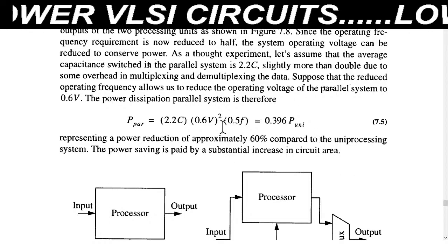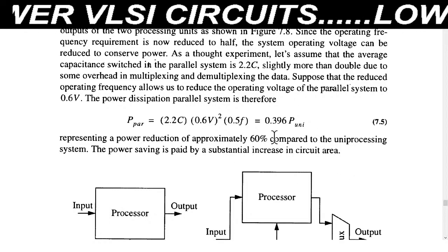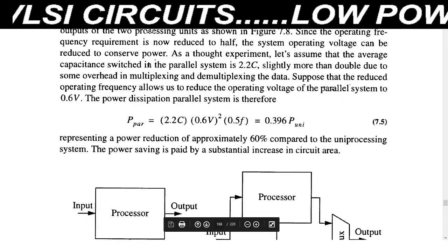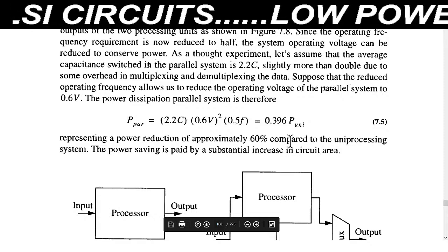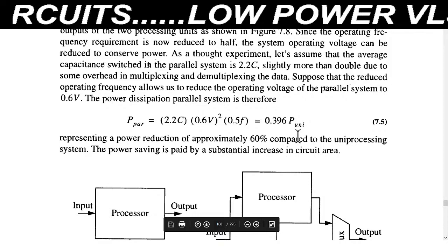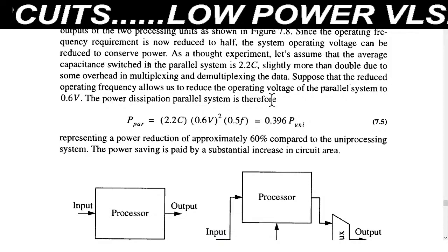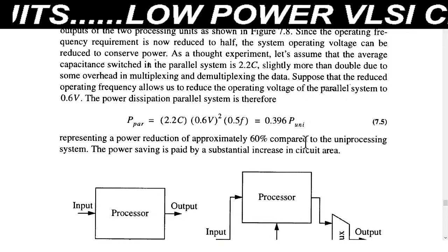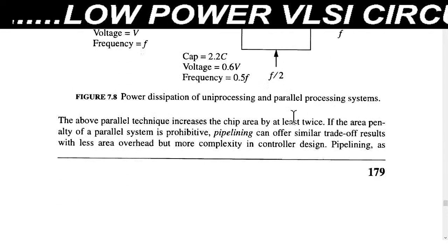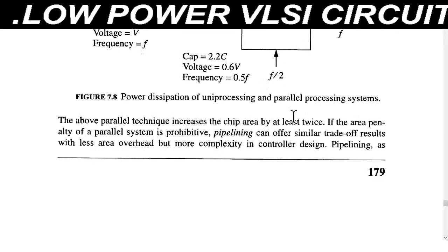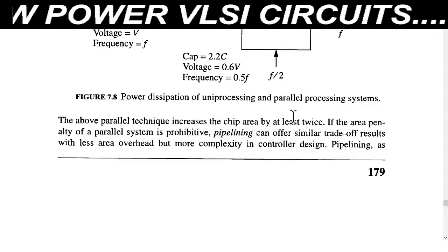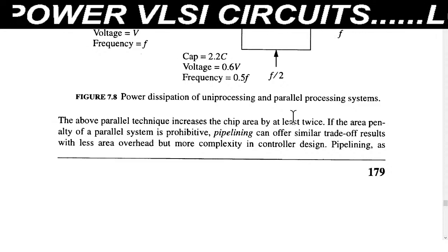If the power dissipation of the original system is P_uni, then after parallel processing this power dissipation will be 0.396 P_uni. This means approximately 60 percent of power is saved, because the overall system consumes only 40 percent of the previous power.